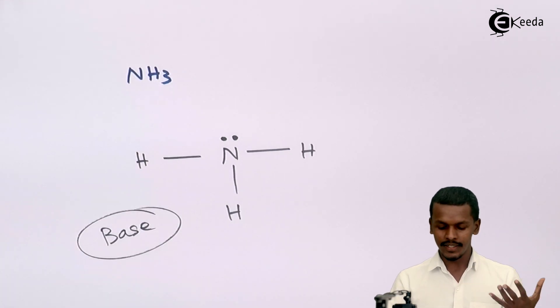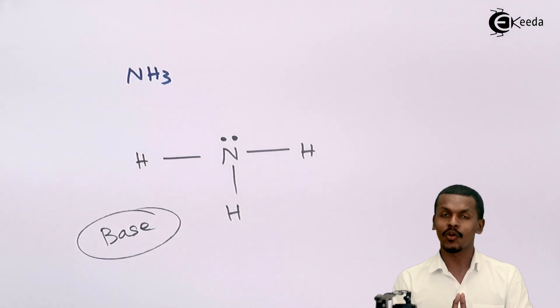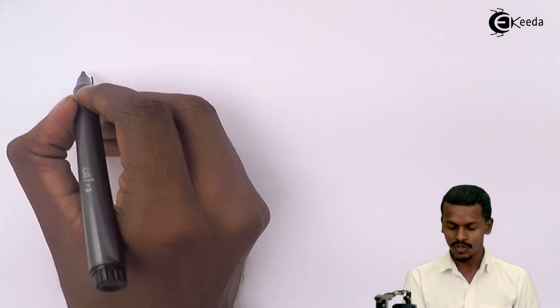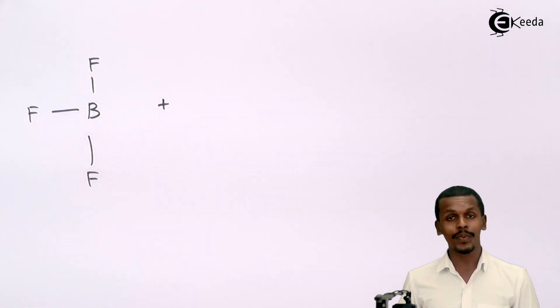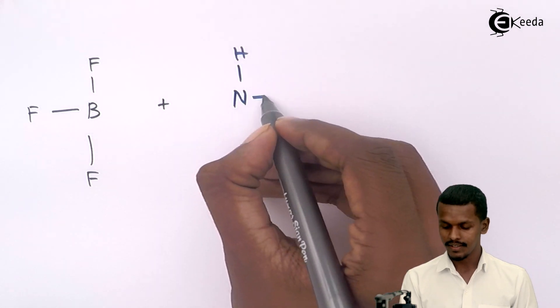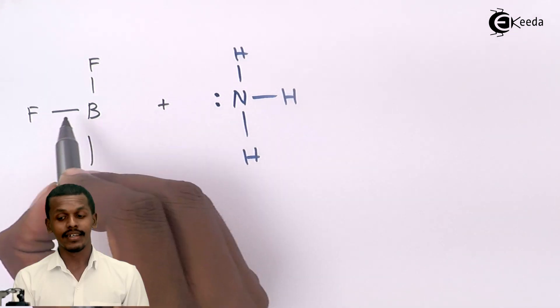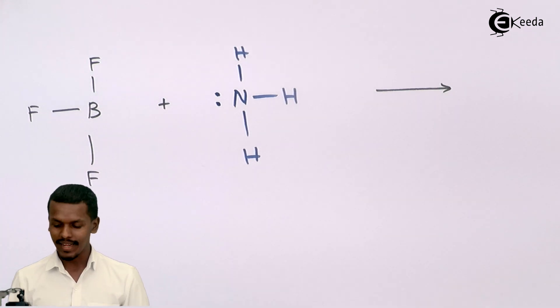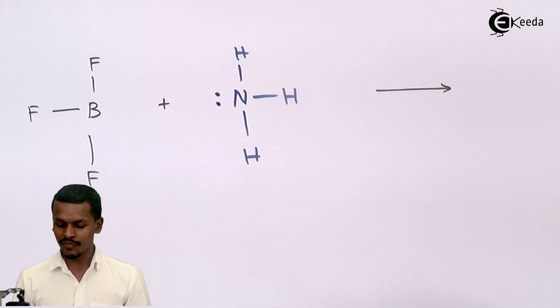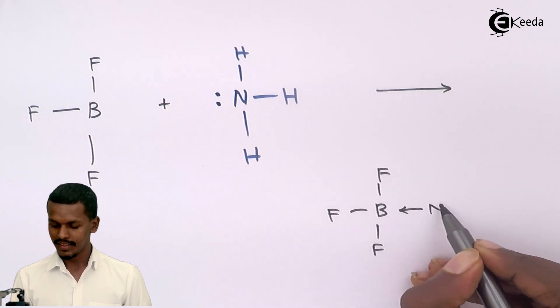So that is the Lewis concept of base. We know BF₃ acts like an acid, and NH₃ — which has a lone pair of electrons — acts like a base. NH₃ will donate its lone pair of electrons to the boron in BF₃, forming a coordinate covalent bond. A neutralization-type reaction occurs to form the product BF₃·NH₃.